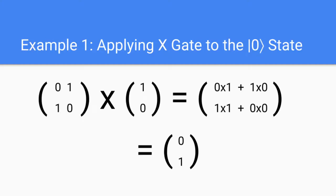Let's take a look at how we can apply the X gate to the |0⟩ state. Just like when we apply the Hadamard gate to any state of a qubit, we multiply the two matrices together. On the left we have the matrix for the X gate, and on the right we have the matrix for the |0⟩ state. We get 0 times 1 plus 1 times 0 on the top, and 1 times 1 plus 0 times 0 on the bottom. Adding these up, we get 0 on the top and 1 on the bottom, which is the |1⟩ state. So when we apply the X gate, we change the |0⟩ state to the |1⟩ state.